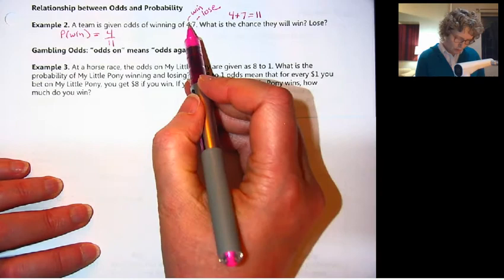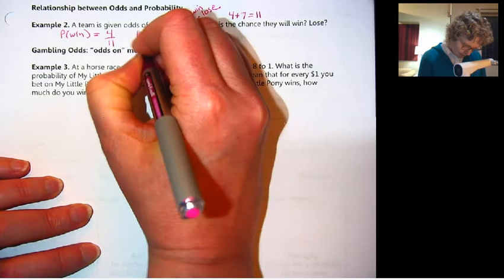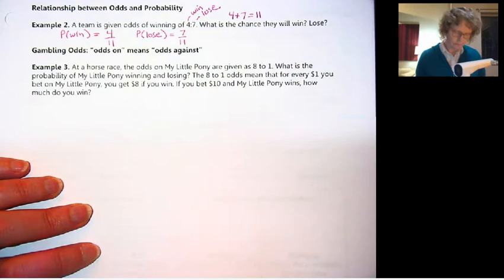Four out of eleven. So four times they'll win in a ratio of seven times that they lose. So the probability of losing is seven out of eleven. Those add up to one or a hundred percent.